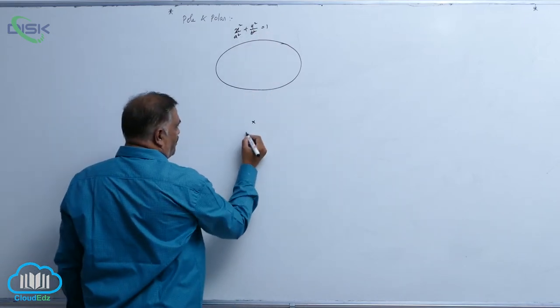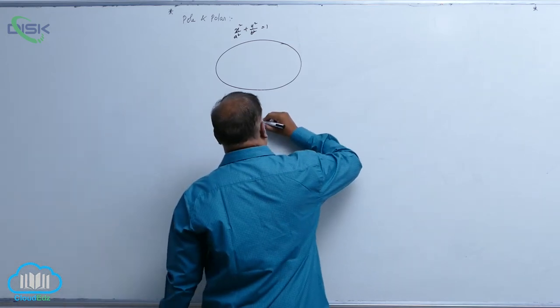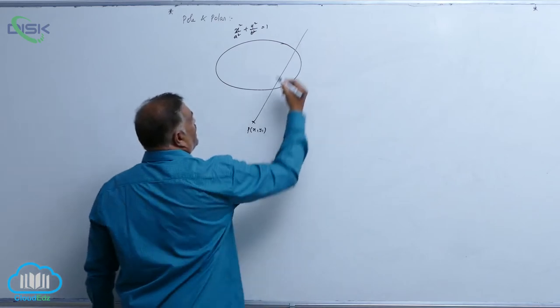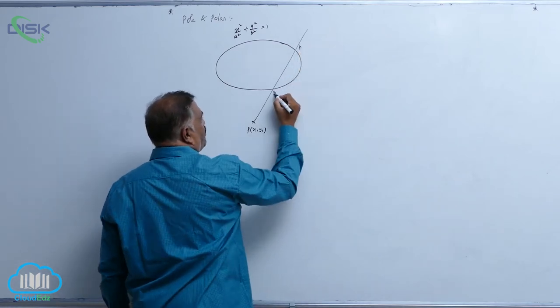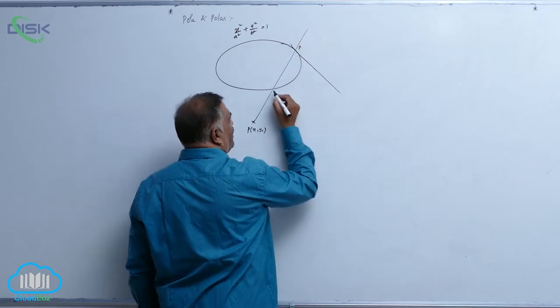Now let us take a point P(x1, y1). Through this point if you can draw one secant like this, it intersects the curve at A and B. Now draw tangents at A and B.